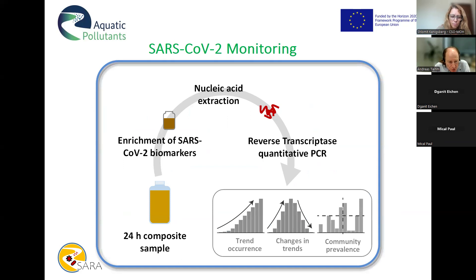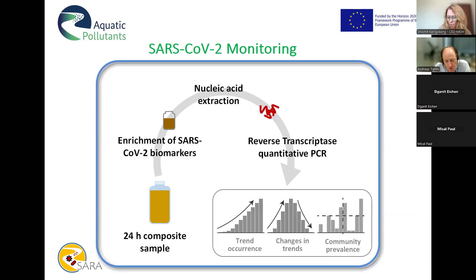I start with the SARS-CoV-2 monitoring. The principle is shown here — 24-hour composite samples are taken from the wastewater treatment plant influent or from the sewage system. The biomarkers are enriched, nucleic acids are extracted, and after reverse transcriptase quantitative PCR, we can see the trends in infection rates — whether increasing or decreasing — or identify high numbers in specific parts of the community.